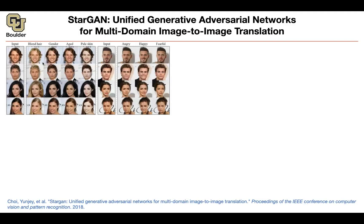Maybe you wanted to translate Monet-style pictures to realistic-looking images or the other way around. Another application is that you have an input and then you want to make that person have blonde hair, change the gender, change the age, or make the skin color different. Or you want to make this person angry, happy, or fearful.